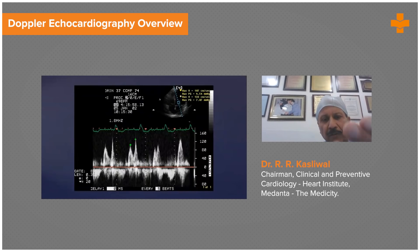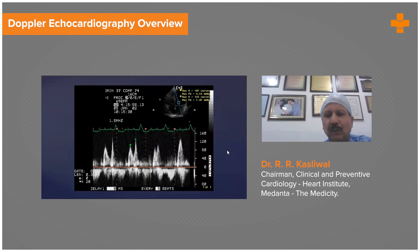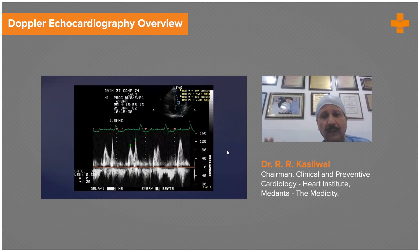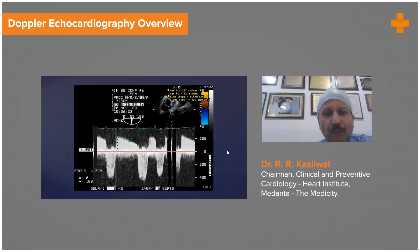Look at this. We have put a sample volume on the mitral leaflets. You can see the blood flow from the LA to the LV — the E-wave and the A-wave. This is one way by which you can actually find out whether the patient has any diastolic abnormalities. All the while we were concentrating on systolic abnormalities, and now we can even talk very correctly about patients who have stiff ventricles or abnormality of relaxation.